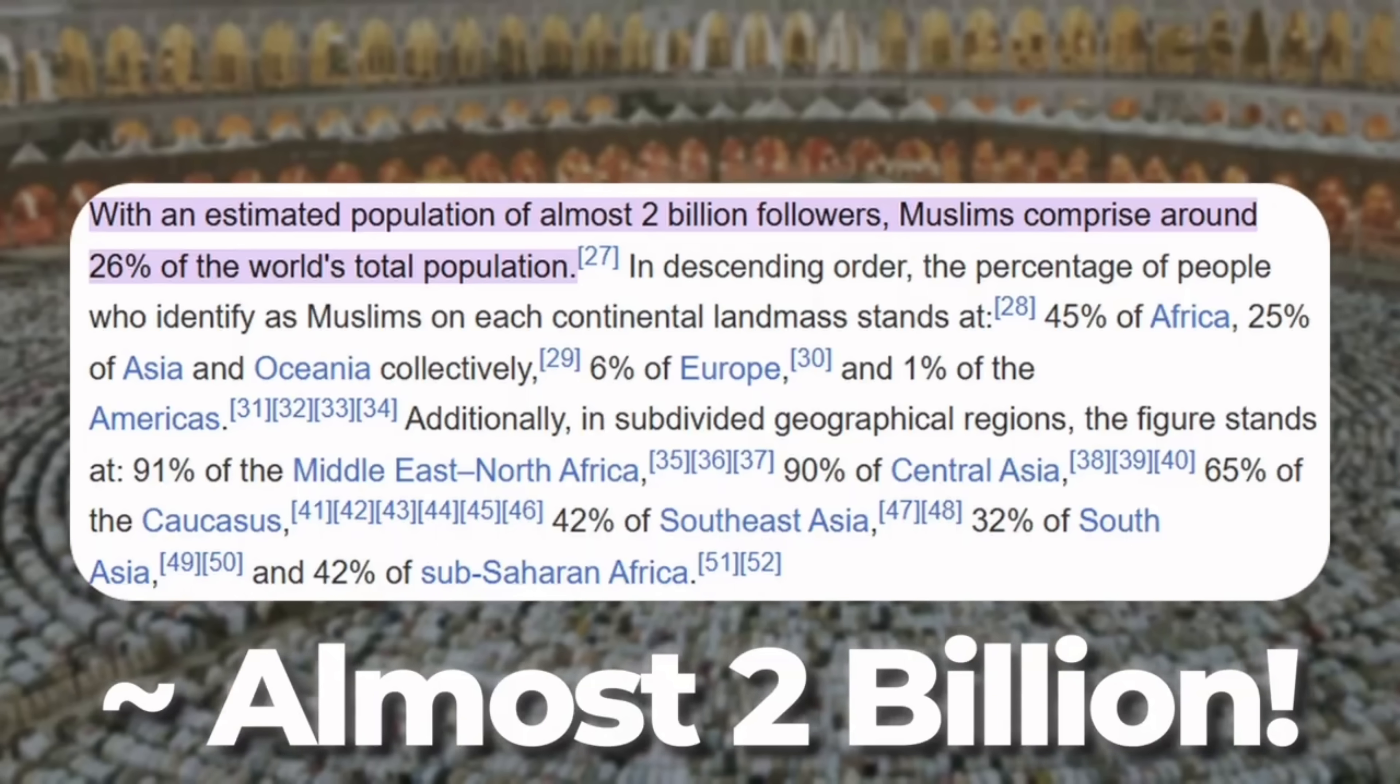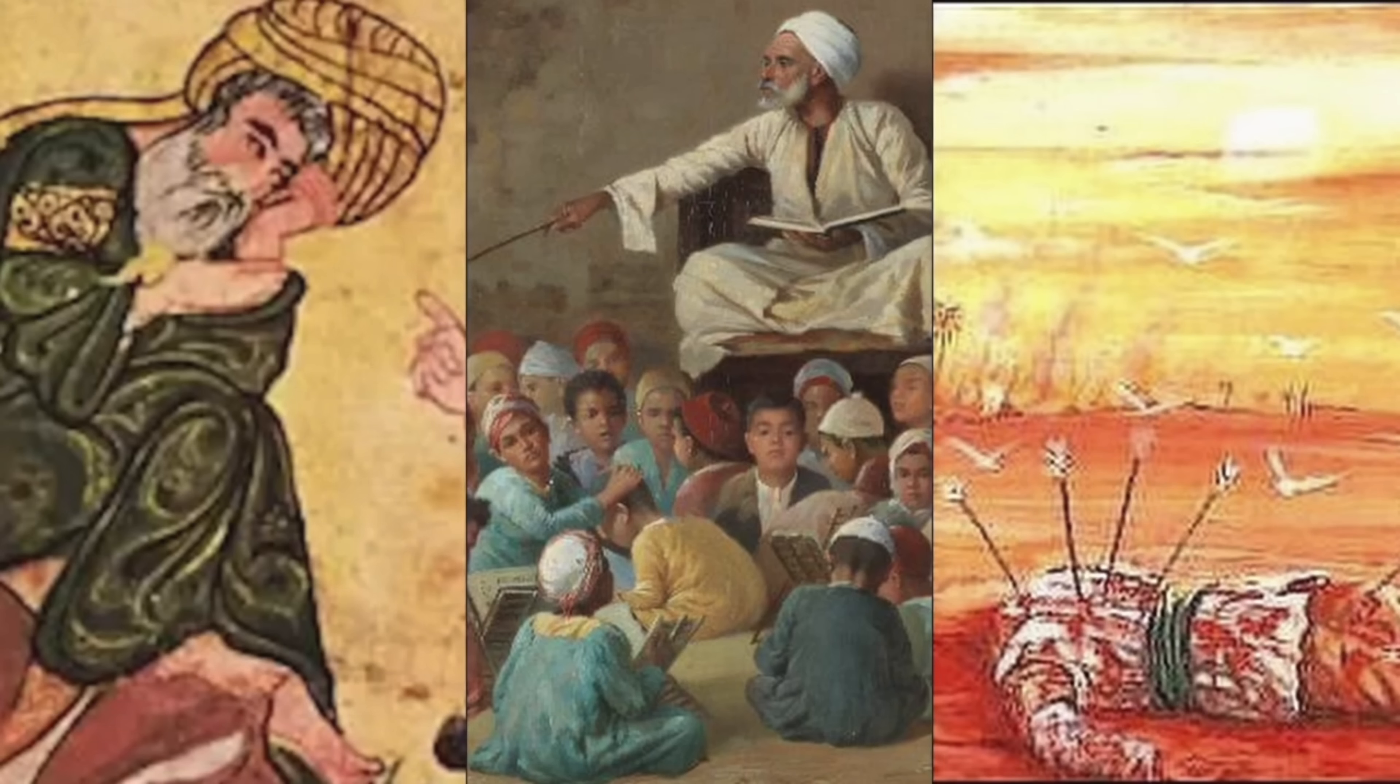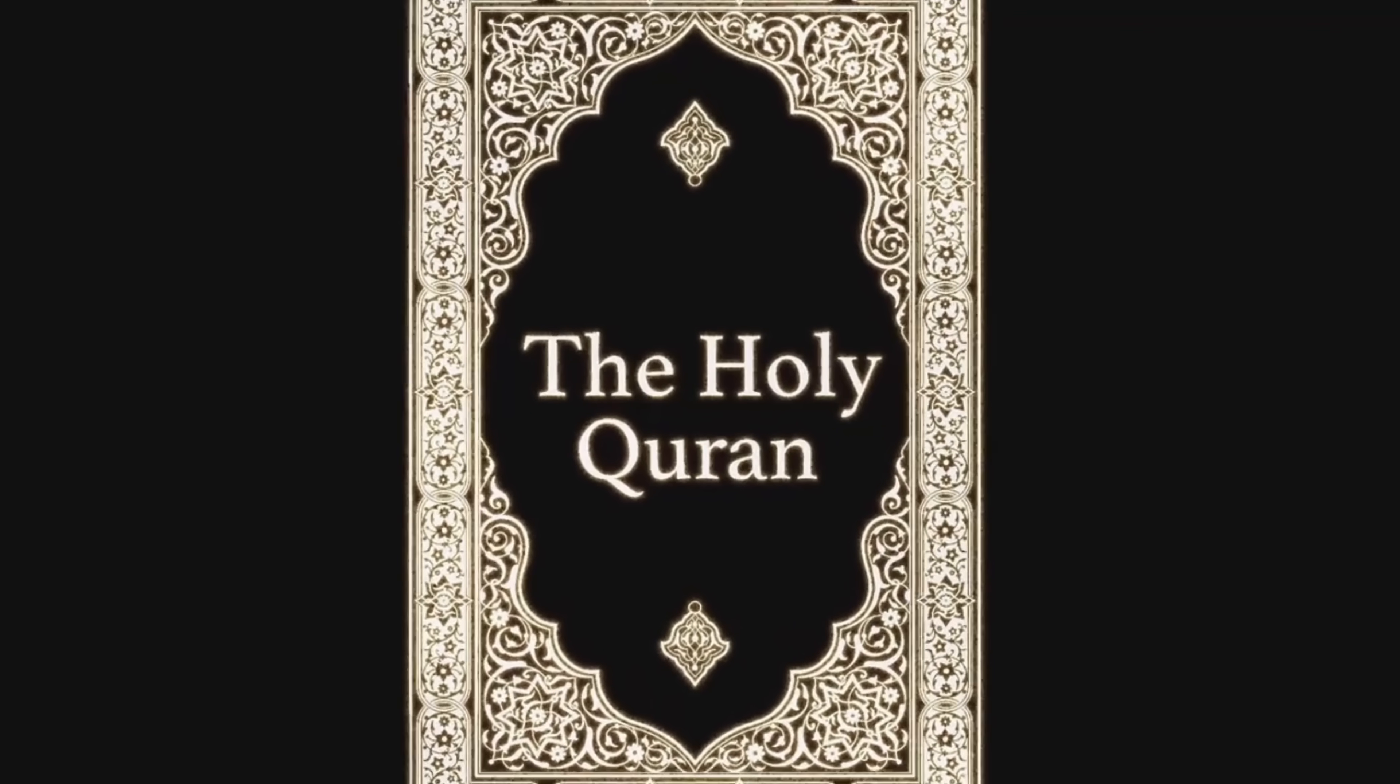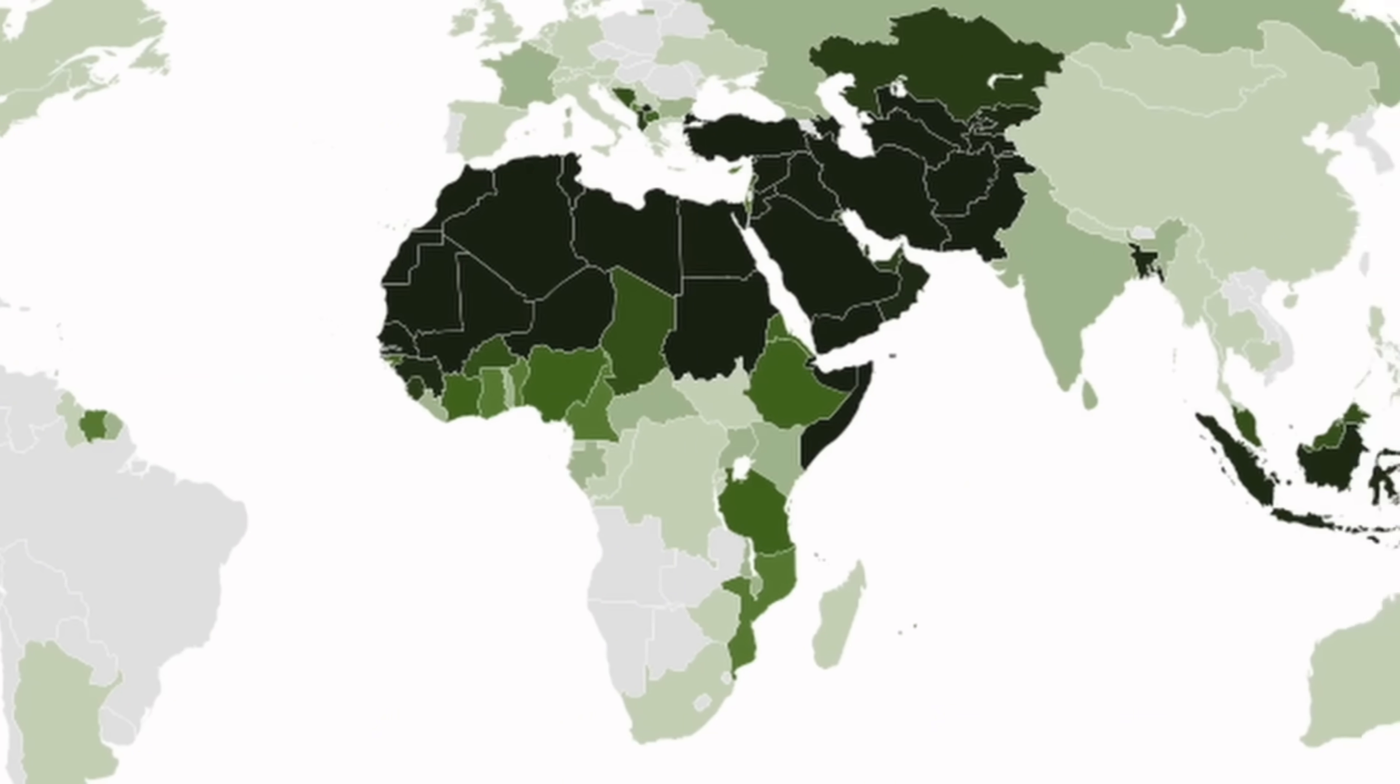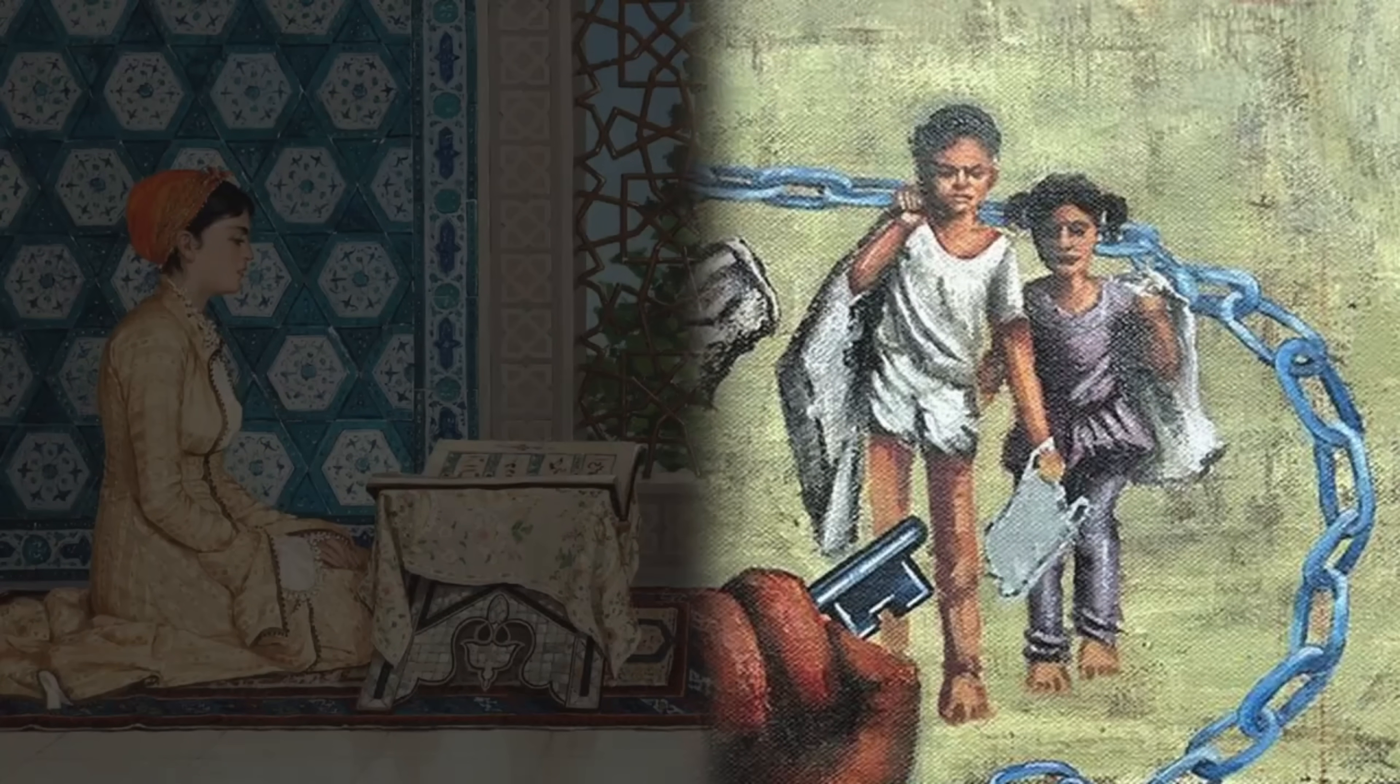Basically, if this book is true, it means that 1.8 billion people are following the actual words of God and that all these teachings are absolute truth. But if this book isn't true, that would mean that a quarter of the world is currently being spiritually catfished. And honestly, both of these possibilities are pretty insane.